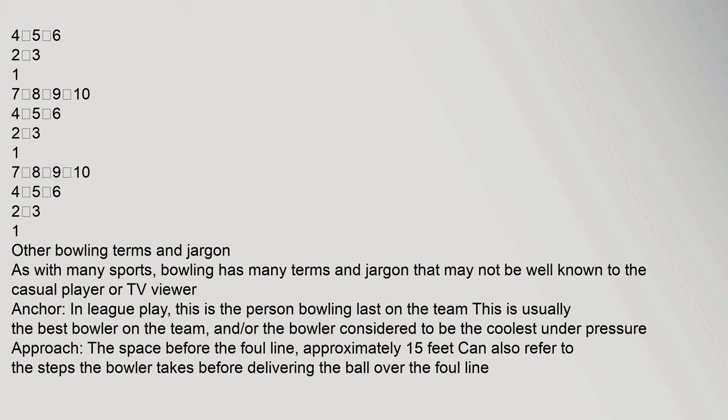As with many sports, bowling has many terms and jargon that may not be well known to the casual player or TV viewer. Anchor: in league play, this is the person bowling last on the team — usually the best bowler, or the bowler considered to be coolest under pressure. Approach: the space before the foul line, approximately 15 feet; can also refer to the steps the bowler takes before delivering the ball over the foul line.